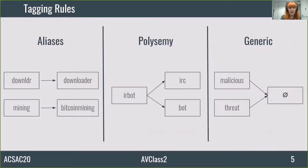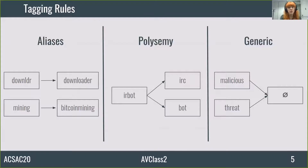Let's move on to the tagging rules. An AV label is divided into tokens. Those tokens need to be normalized and converted into tags. Tagging rules are used to specify the set of tags that a token will be replaced with. Most tagging rules map a token to a single tag. In this case, we say that the token is an alias for the tag, since it captures the same concept. Aliases are identified when different vendors use different tokens to capture the same concept. A tagging rule may also define that a token maps to multiple tags, if the token maps to multiple concepts. A tagging rule can also define that a token maps to an empty set of tags — we call such tokens generic because they do not provide useful information. Generic tokens are discarded during tagging.